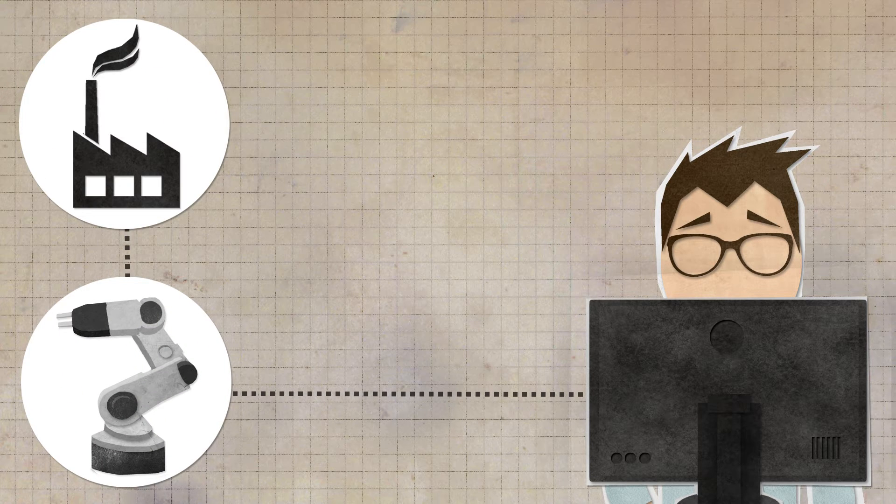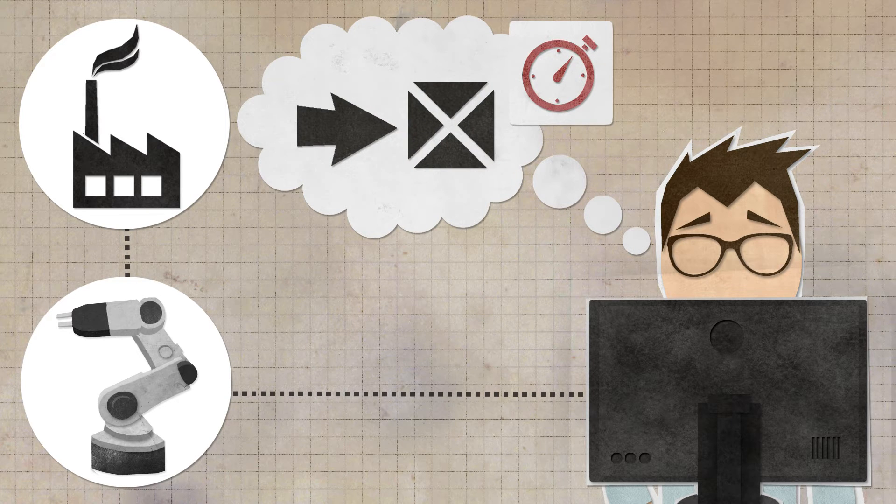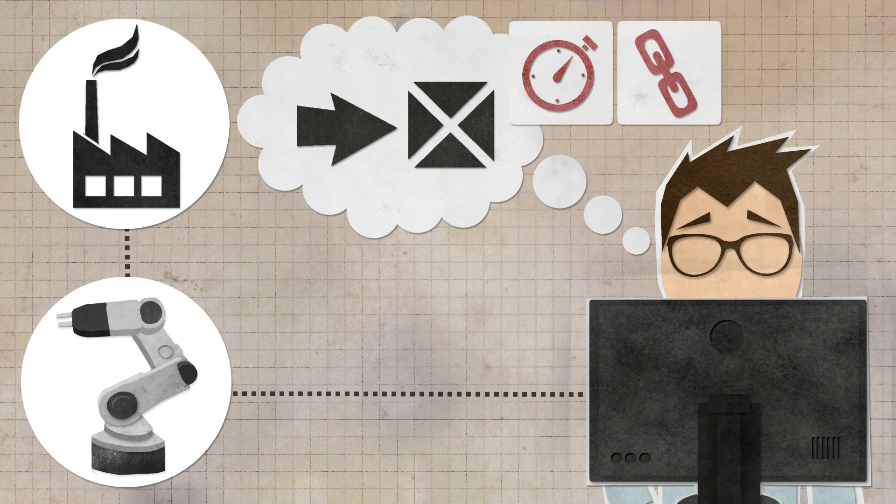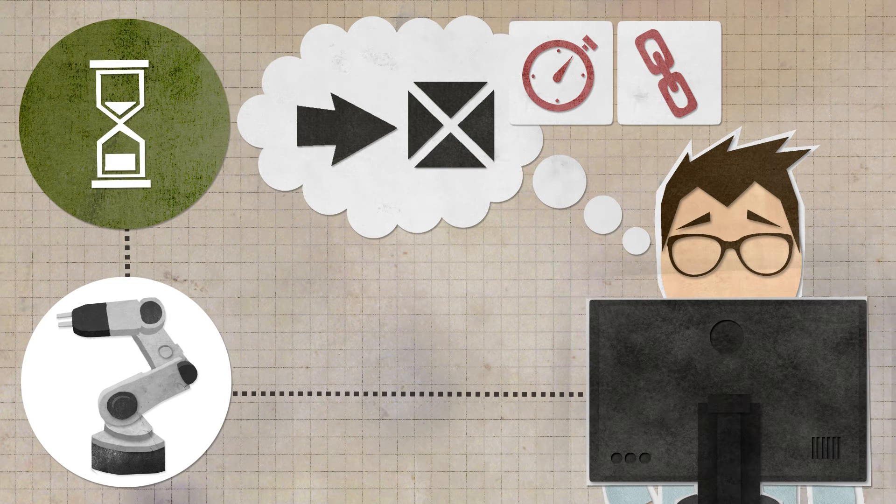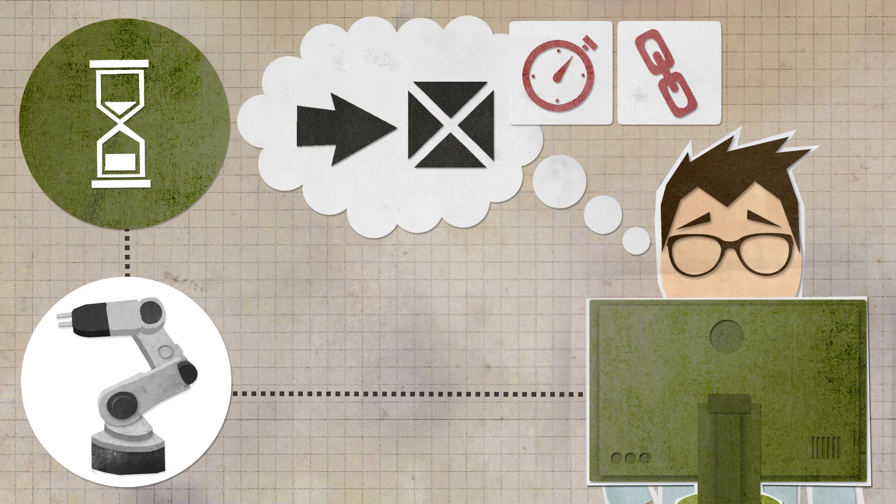Serial production should start as soon as possible and work safely and reliably from the beginning. The developer of the control programs does not want to waste precious time waiting for the plant to be completed.